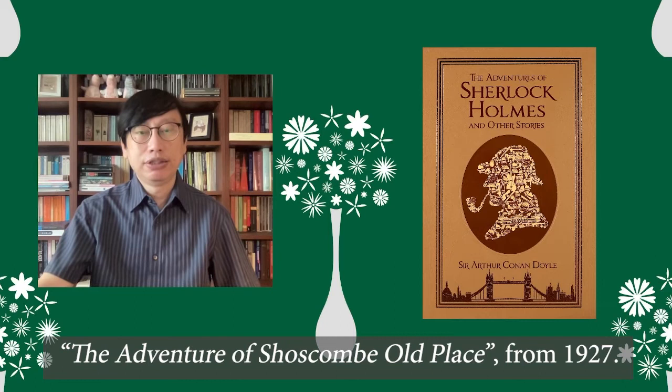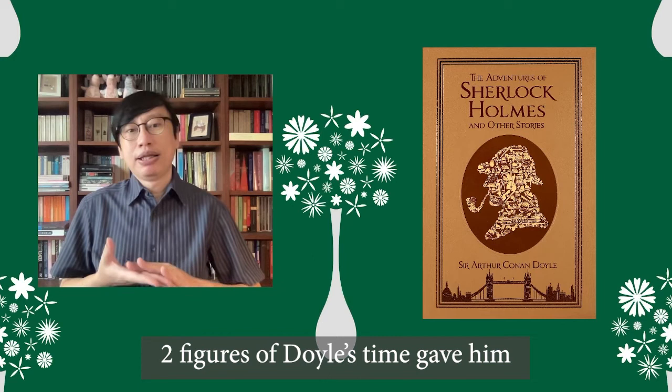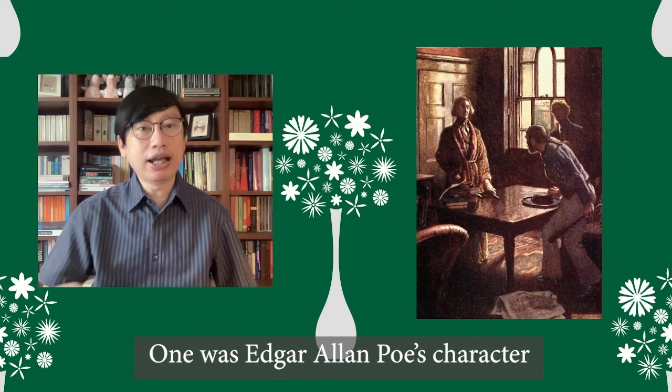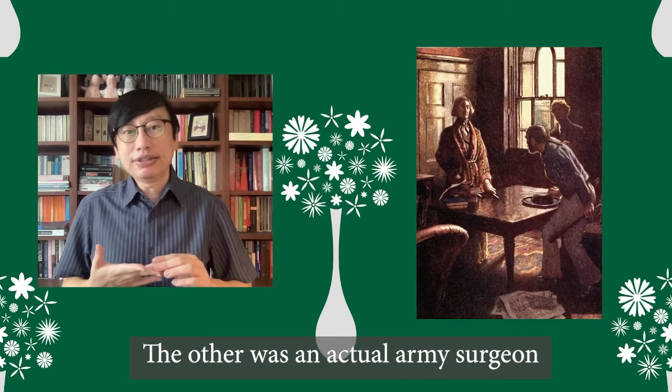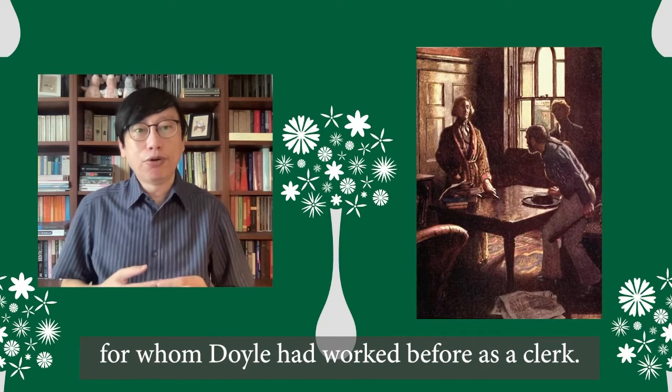Two figures of Doyle's time gave him the inspiration for creating Holmes. One was Edgar Allan Poe's character C. Auguste Dupin, of what is now widely considered as the West's first detective stories. The other was an actual army surgeon named Joseph Bell, for whom Doyle had worked before as a clerk.